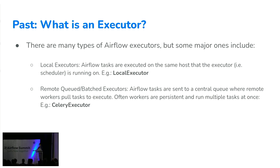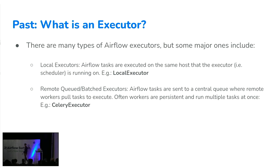Another type is remote executors, specifically remote batch or queued. The Celery executor is the main example. It's more robust because you've decoupled the executor work from where the scheduler lives. You have workers listening to a queue waiting for tasks, and the executor sends tasks to that queue. You often have parallel workers, and workers themselves can run more than one task. However, you're paying for these persistent hosts, and multiple tasks running on one worker can cause noisy neighbor problems — sharing CPU and memory.